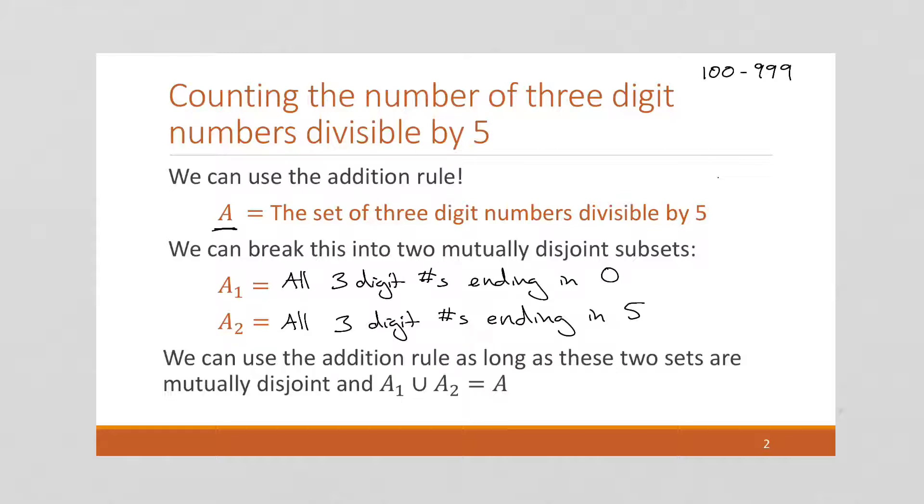And we can use the addition rule as long as these two sets are mutually disjoint. And since no number can end in both a 0 and 5, we know there's no overlap. But this does include all possible numbers that are divisible by 5. So their union is indeed our original set.